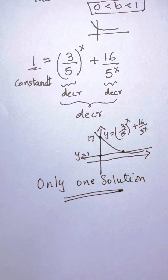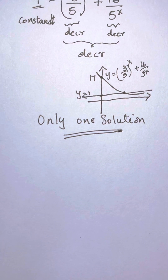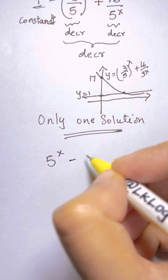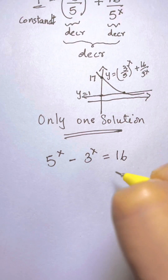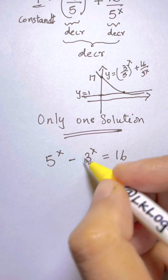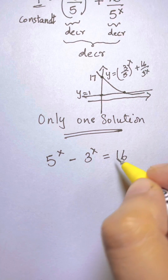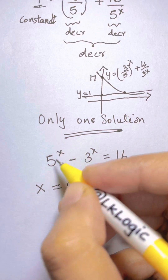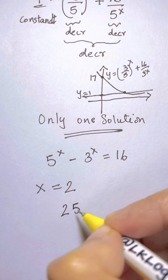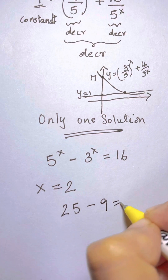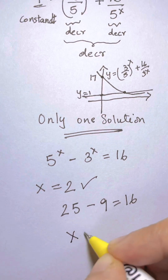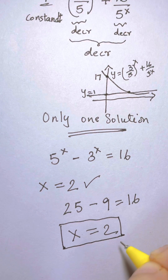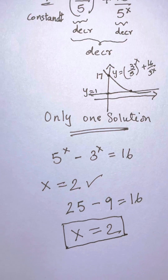Now let's find that solution. Our original equation is 5^x minus 3^x equals 16. Using trial and error: x equals 1 gives 5 minus 3 equals 2, which is not 16. Trying x equals 2: 5 squared is 25, minus 3 squared which is 9, gives 16. So x equals 2 is the solution, and it is the only solution.